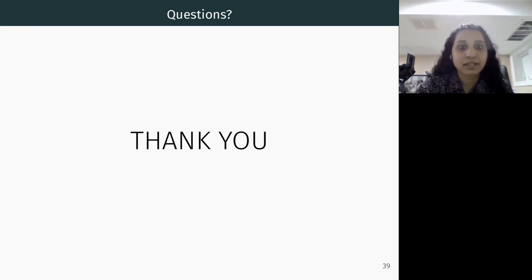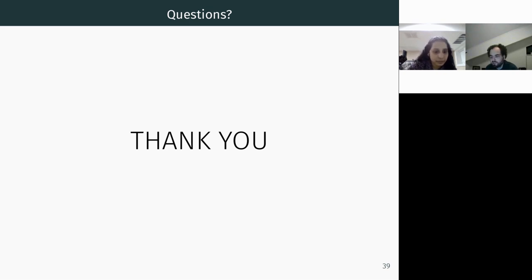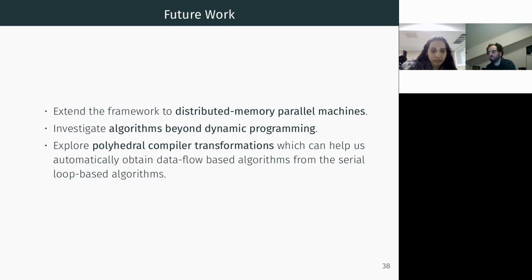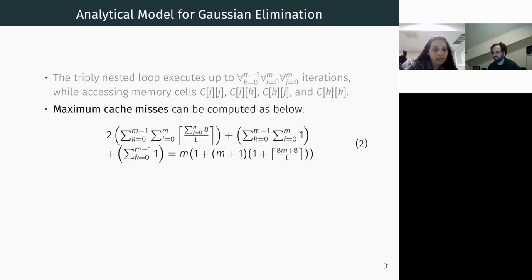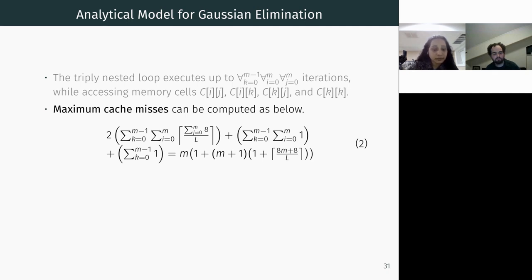Thank you for the talk. There was a question from Chen asking whether the equation is equivalent to assuming no cache reuse, and whether CNC improves over fork-join in that measure. The response: we assume a very small cache where only three elements fit, using a set-associative cache assumption. For a 32K L1 cache, we are using only one-fourth of the cache. So the equation gives the maximum number of cache misses as an upper bound.